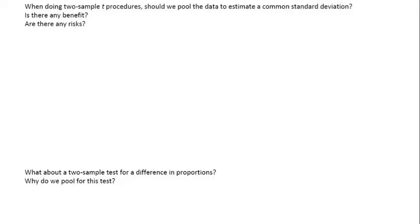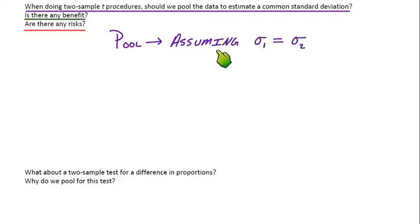The next part here says, when doing two sample T procedures, should we pool the data to estimate a common standard deviation? So if you remember, back when we did proportions, we actually did want a pooled proportion. But for means, that means that we would assume that the two groups, the first sample and the second sample, come from a population where the standard deviations are the exact same.